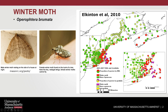Winter moth is really restricted to eastern Massachusetts, the Cape, and the islands. Once you hit central Mass and head west, you get into Bruce spanworm territory. That said, Dr. Elkington has trapped winter moth in western Massachusetts, but historically the damaging populations of this insect have been restricted to the eastern areas of our state.